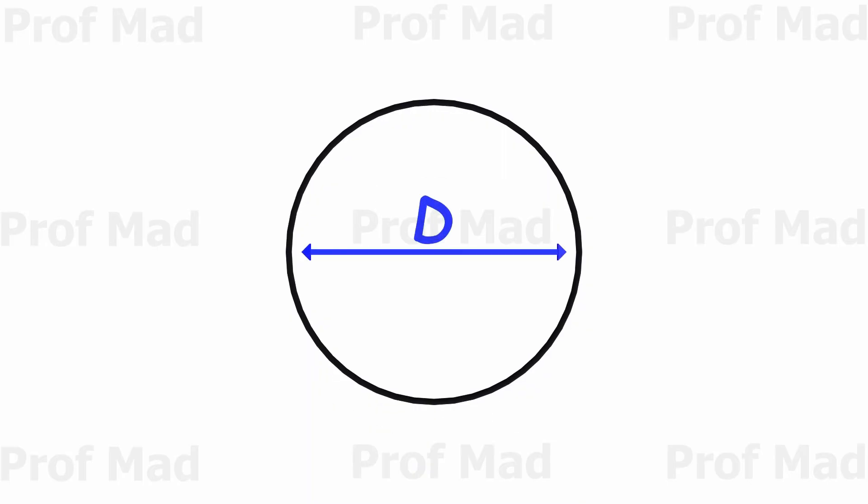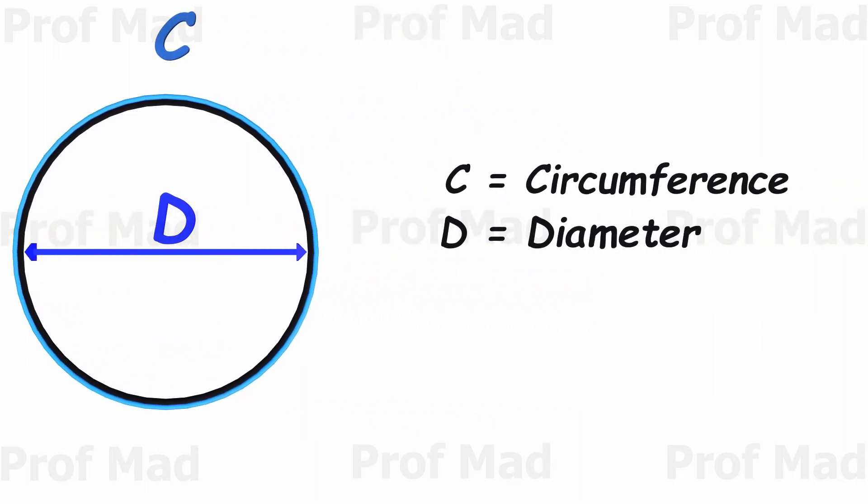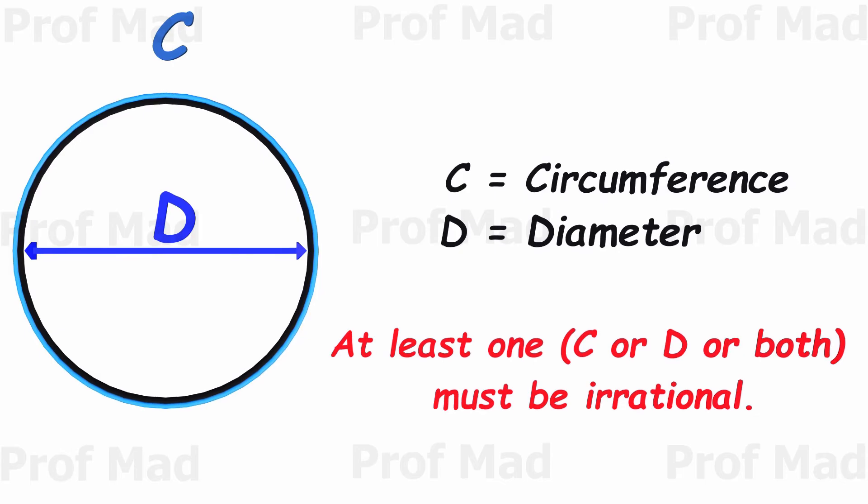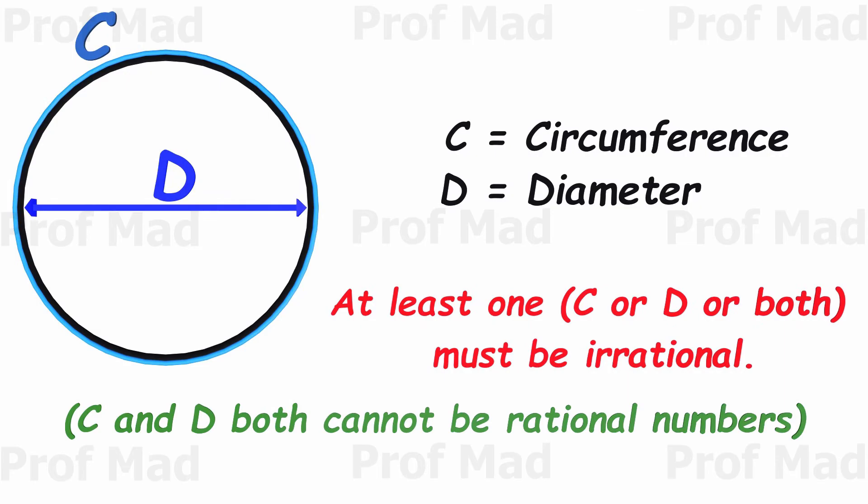When it comes to circles, there is another interesting fact that we must know. When we consider the diameter and circumference, either the diameter or the circumference, or sometimes both, must be irrational numbers. Both cannot be rational at the same time.